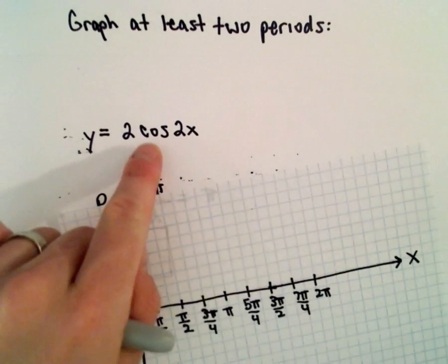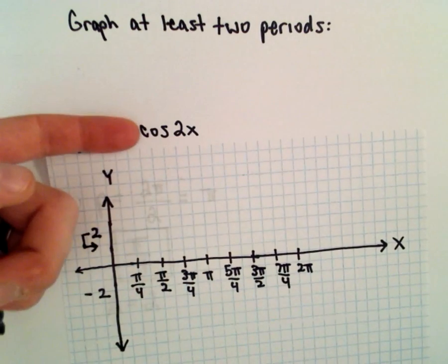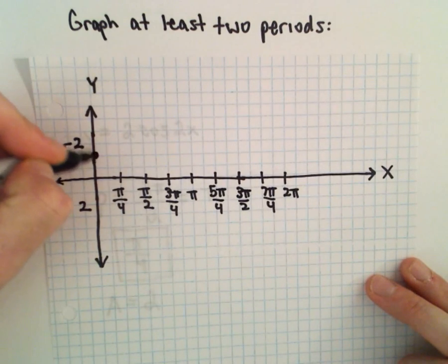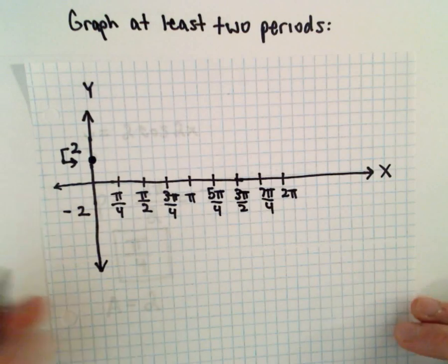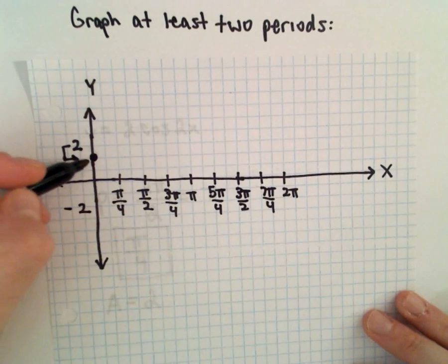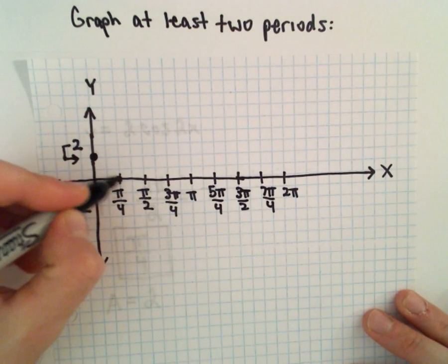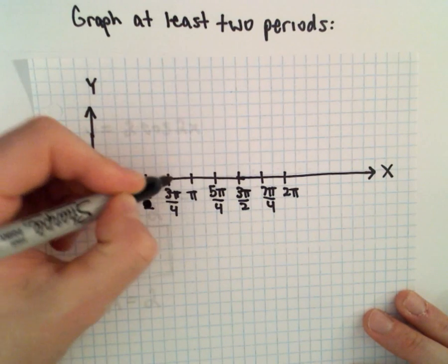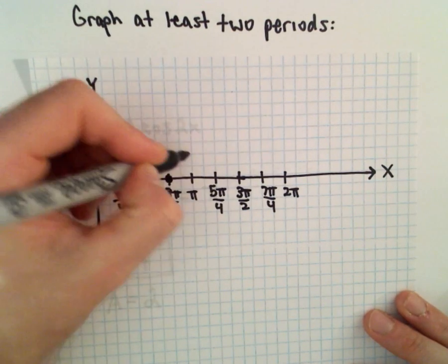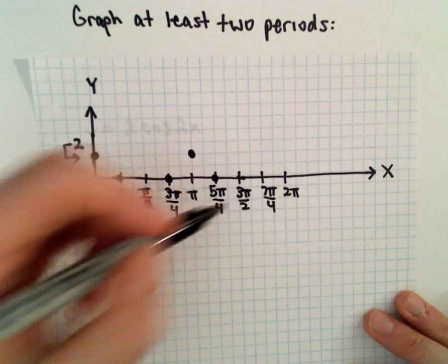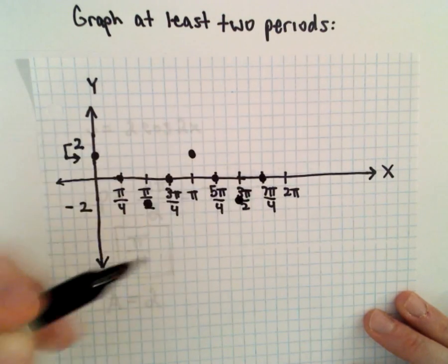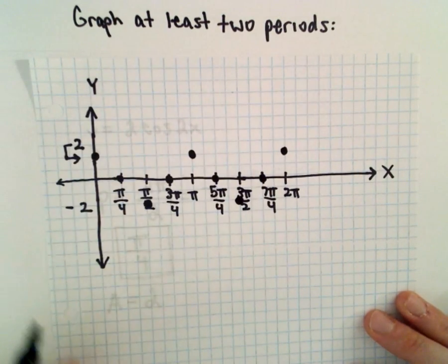So if we substitute in x equals 0, we'll get cosine of 0, which is 1, we'll multiply that by 2, that'll give us positive 2. And after that, again, that's why I like to use these increments. At the next increment, it'll be at 0. At the next increment, it'll be at negative 2. And then back at 0. Then back at positive 2. Then it'll be at 0. It'll be at negative 2. Then at 0. And then back at positive 2.